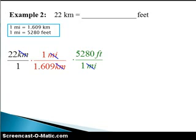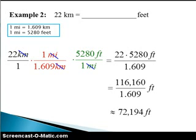Now, we're ready to multiply, simplify, and divide to get our answer, which is 72,194 feet. Therefore, 22 kilometers is equal to 72,194 feet.